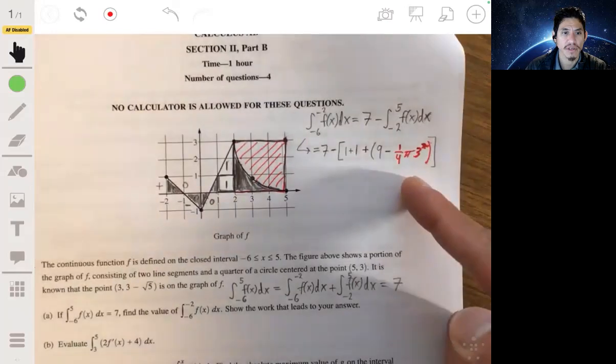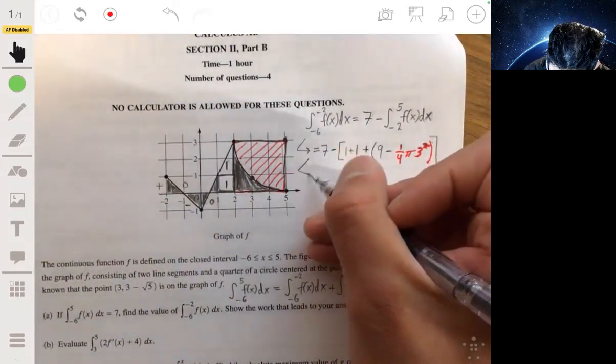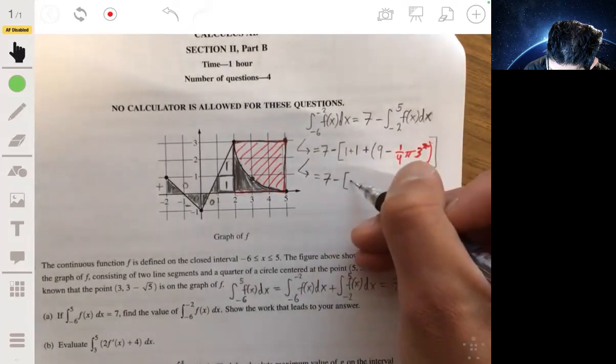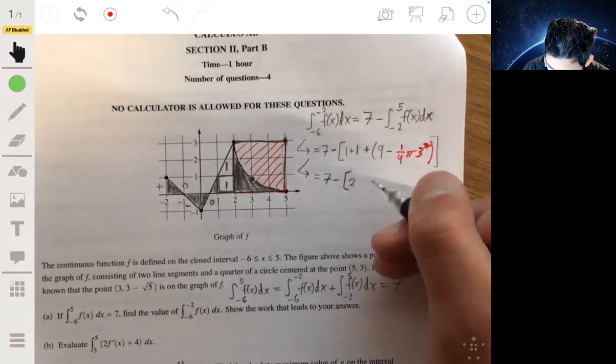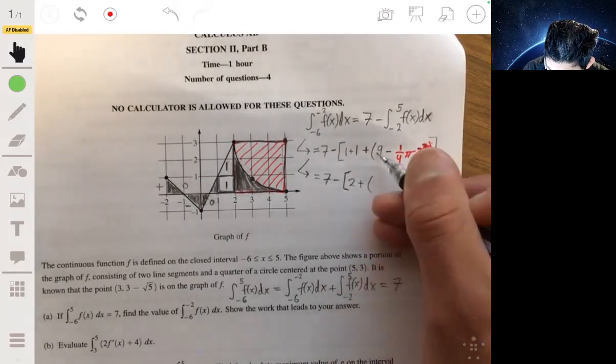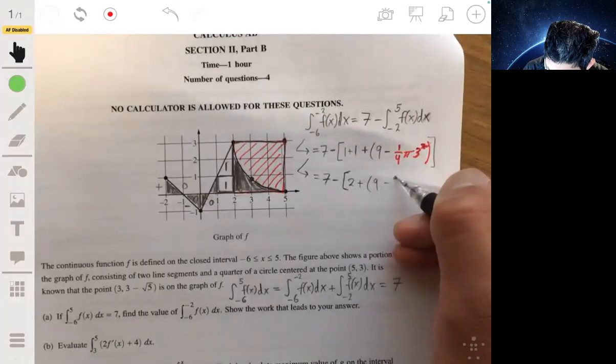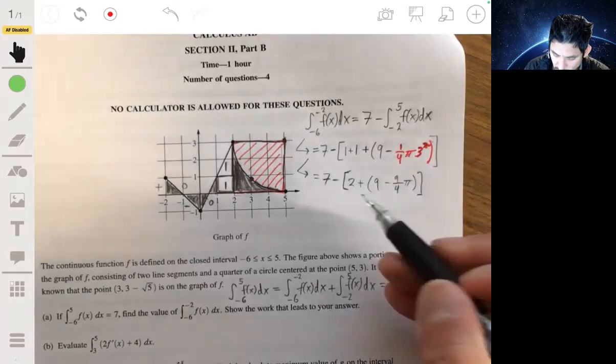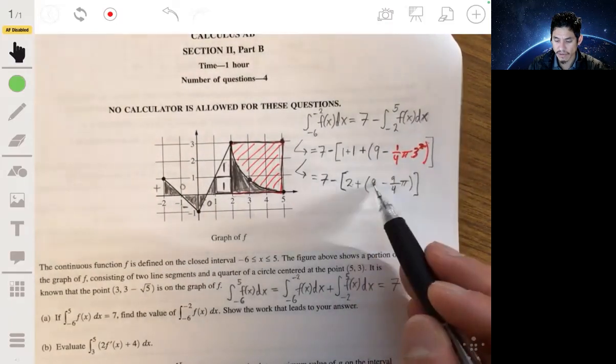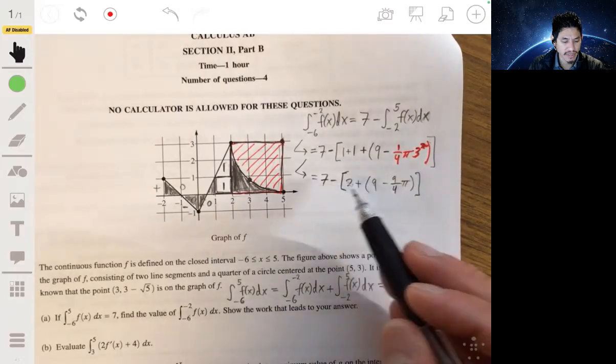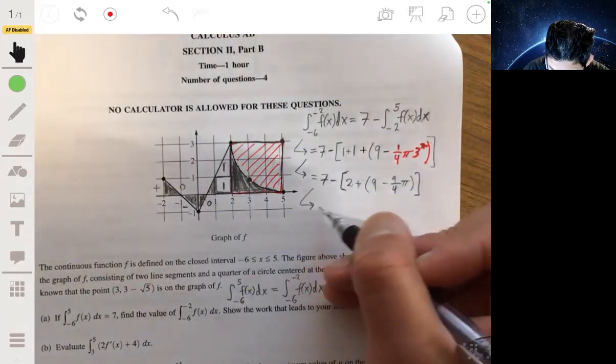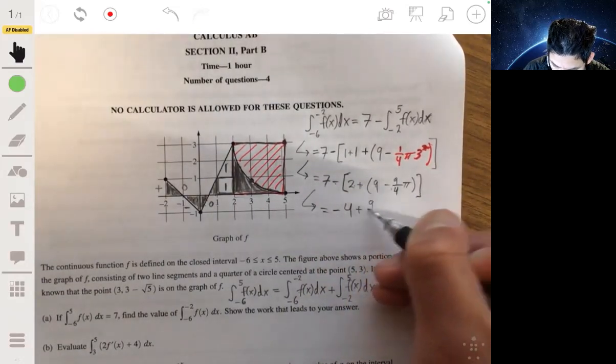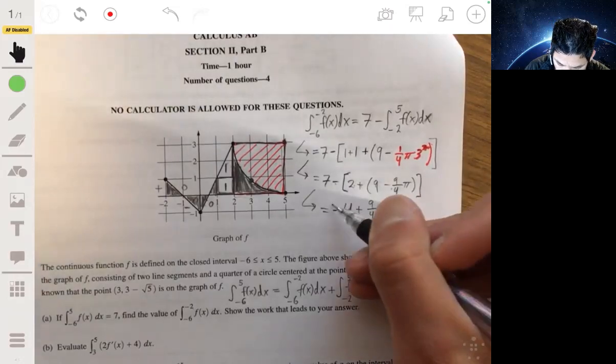Okay, then it's really just simplifying this now. So we get 7—and be careful with the signs, because this is where it gets a little tricky or annoying or tedious. So 2 plus 9 minus (9/4)π. So 2 plus 9 is 11. So you're going to have 7 minus 11. So you're going to have negative 4 minus a negative (9/4)π, so that'll be plus (9/4)π. This will be the answer for A.